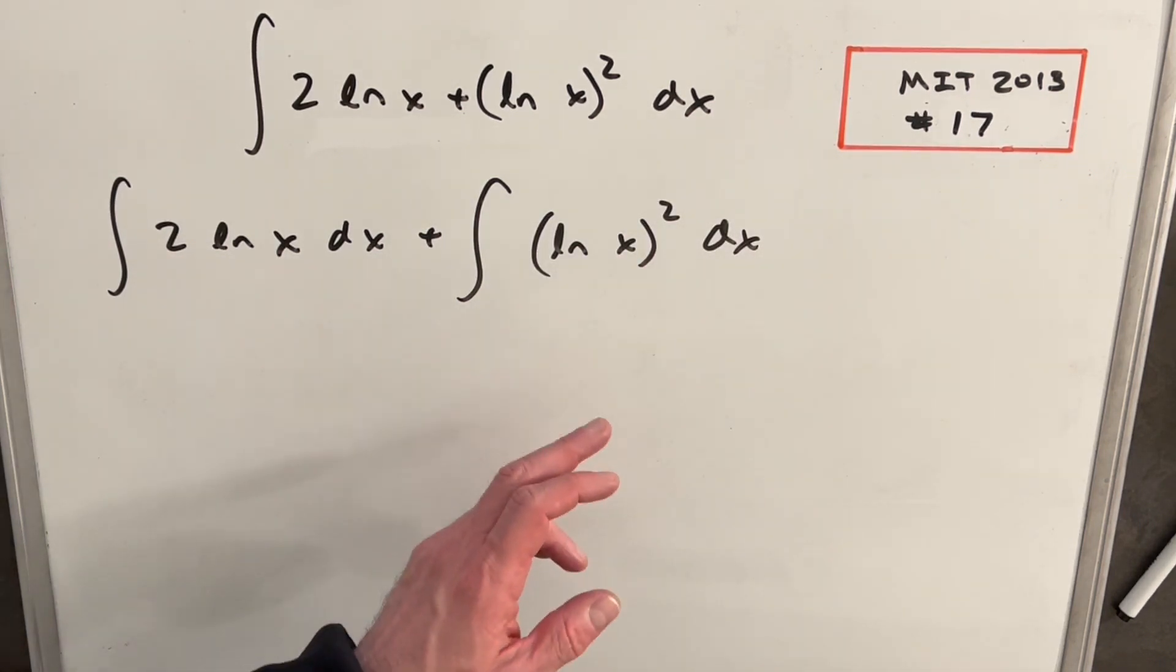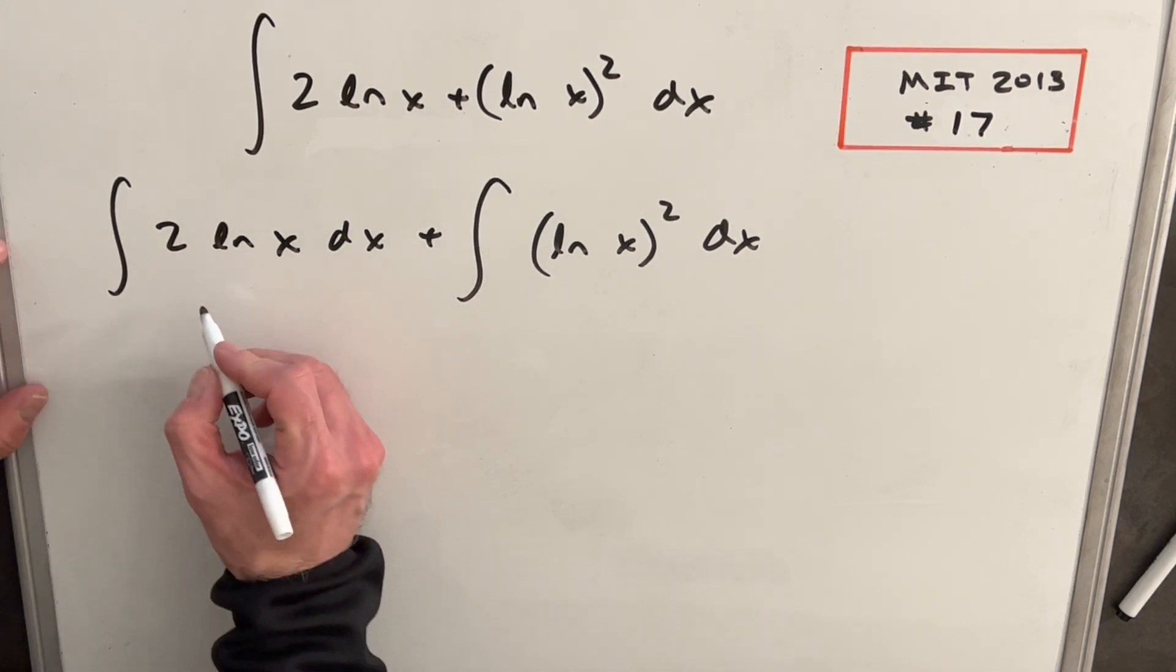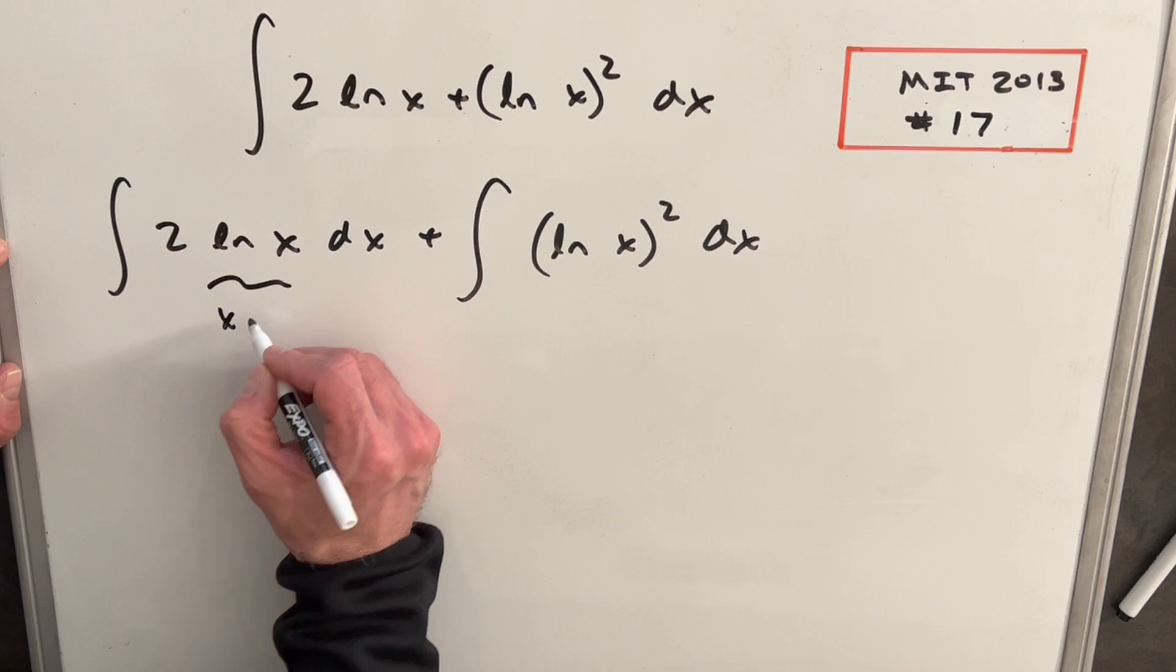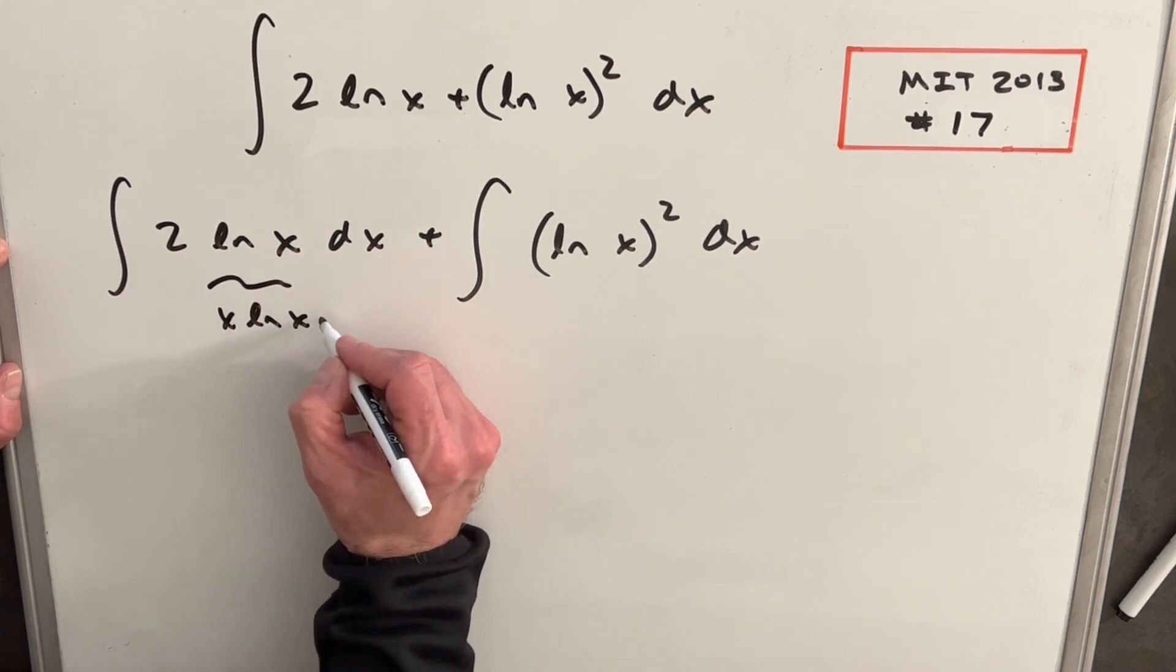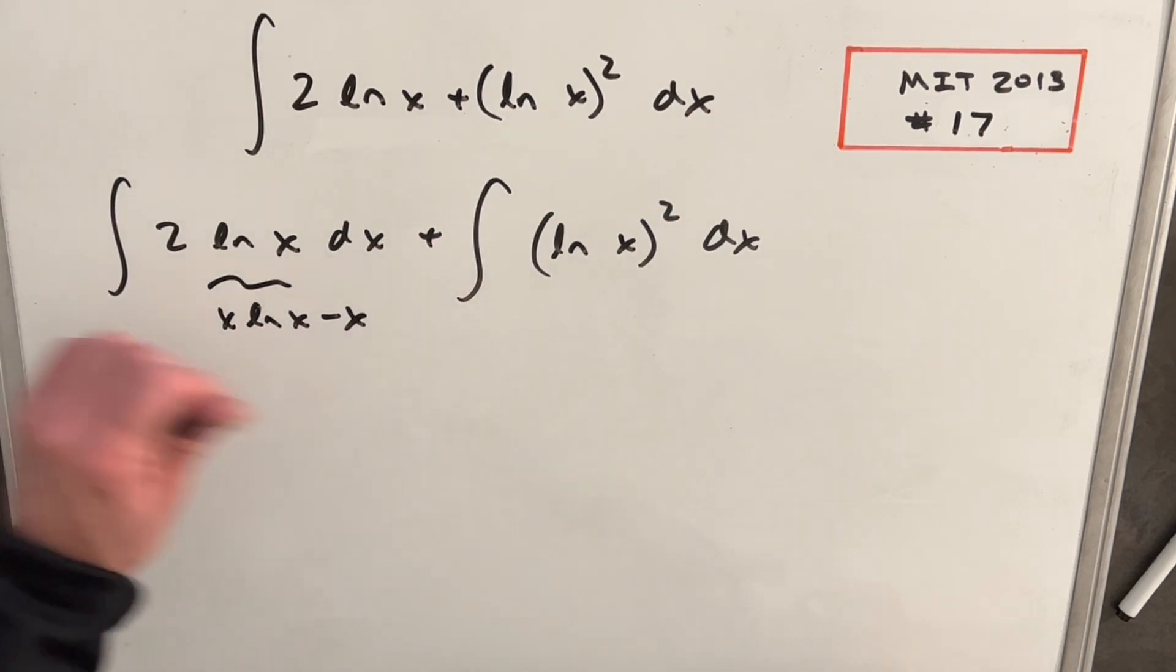My first thought when integrating ln x is to use integration by parts. I'm going to put this first one aside for now. We know that this is a very common integral, actually x ln x minus x. But we're going to focus on this second one.